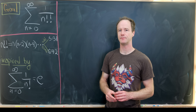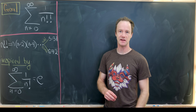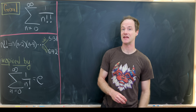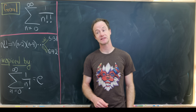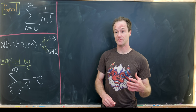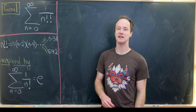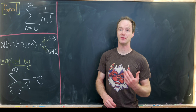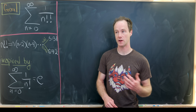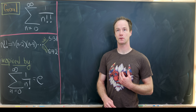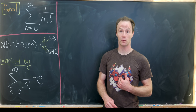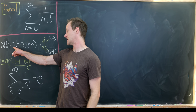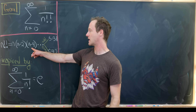There's a bit to unpack here. What is n double factorial? It's like a descending product, just like n factorial, except instead of descending by 1, you descend by 2. So for example, 5 double factorial would be 5 times 3 times 1, whereas 8 double factorial would be 8 times 6 times 4 times 2. In general, n double factorial is n times n minus 2 times n minus 4.